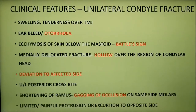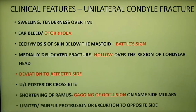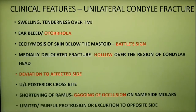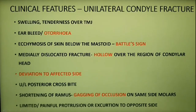During opening, the mandible deviates towards the side of the fracture — that means it deviates towards the affected side. There is unilateral posterior crossbite. Displacement of the condyle from the fossa, or if the fractured condylar neck is overriding, causes shortening of the ramus on the same side and produces gagging of occlusion on the same side molars. There is also limited or painful protrusion or excursion — excursion means while the mandible is being deviated to the opposite side, it is painful.